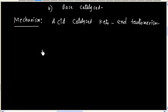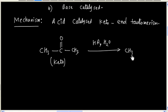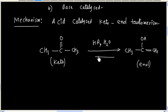We have the keto form, with HA as the acid and H₂O as the medium, and we have the enol form with an equilibrium between them. We will now look at the mechanism for this process.